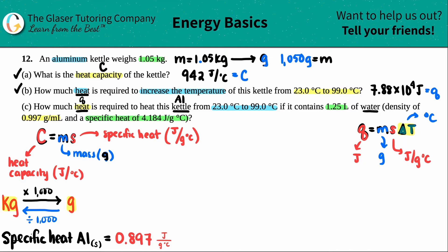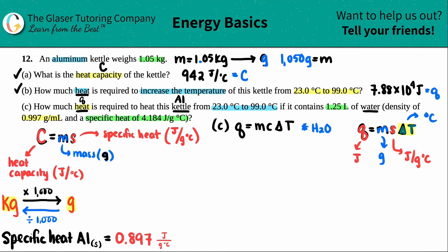For Part C I'll use Q equals M times s times delta T, this time all for the water. The delta T is the same: 99 minus 23, which is 76.0 degrees Celsius. The s value — the specific heat of the water — is 4.184 joules per gram degree Celsius. Now I need to find the mass, which must be in grams.